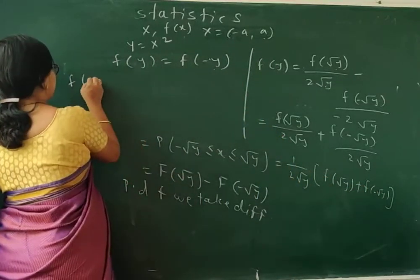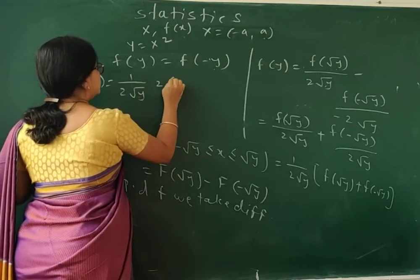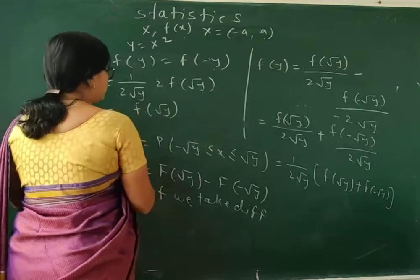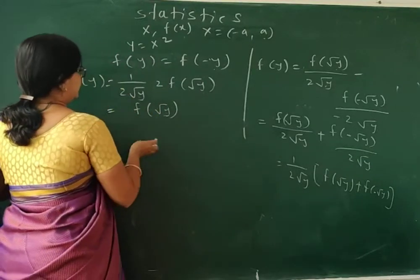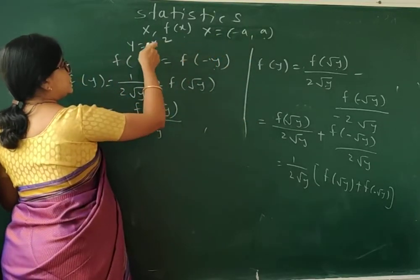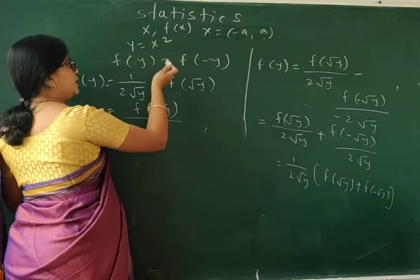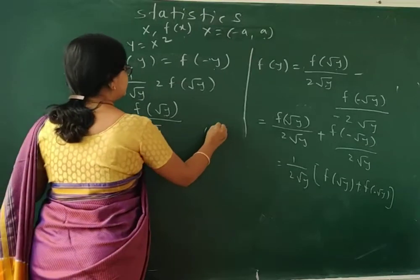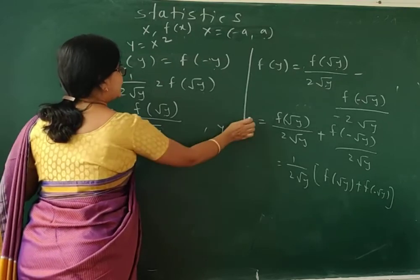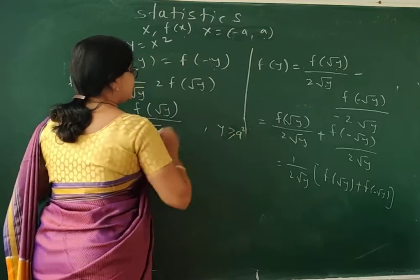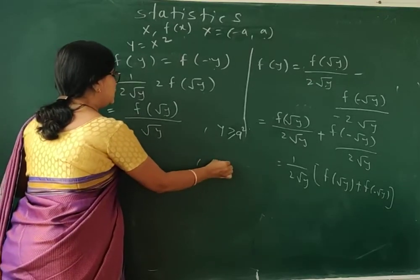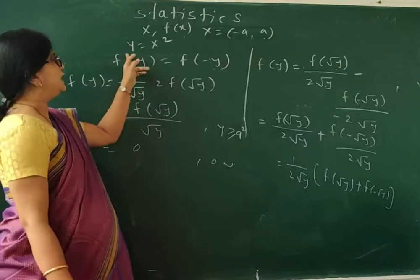When the range of x is from −a to a and Y = X², then the range of Y is from 0 to a². So the distribution of Y, f_Y(y), holds for y in the range 0 to a².